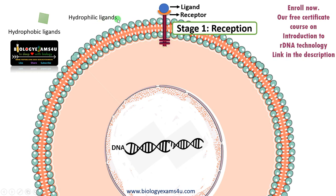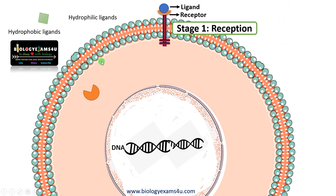In the case of ligands like peptide hormones such as insulin, the receptors are on the cell's surface as it cannot cross the plasma membrane. Whereas in the case of hydrophobic ligands like steroid hormones such as estrogen, it can cross the plasma membrane as it is made up of phospholipid. Therefore, it has receptors either on the cytosol or inside the nucleus.